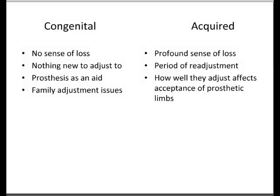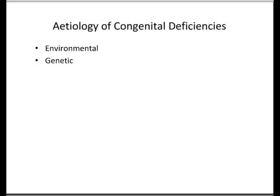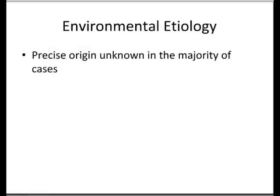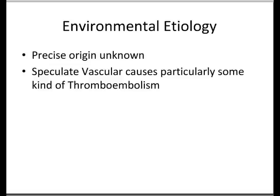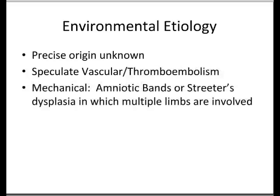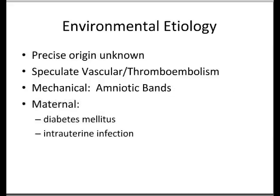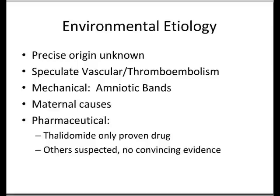There are environmental and genetic etiologies of congenital deficiencies. For environmental etiology, no one really knows what causes it in the vast majority of cases. There might be vascular causes, particularly thromboembolism, but this is poorly understood. Mechanical causes such as amniotic bands or sirenomelia dysplasia, where multiple limbs are involved, may also be a cause. In the mother, diabetes and intrauterine infection are two major causes. Thalidomide is the only proven drug to definitely cause congenital limb deficiency; others are suspected but there's no convincing evidence, yet pharmaceutical guidelines advise what not to take during pregnancy.